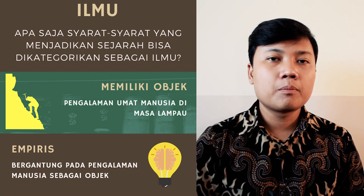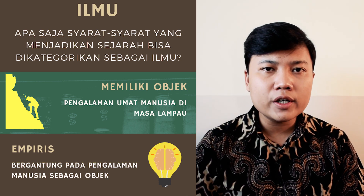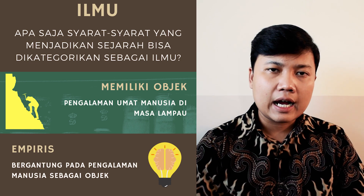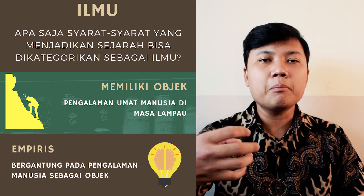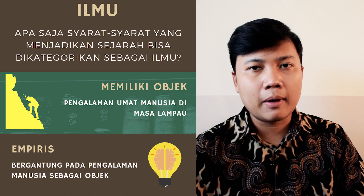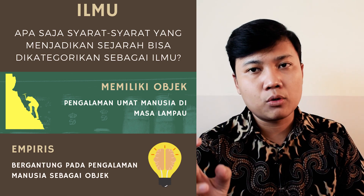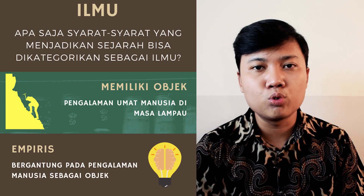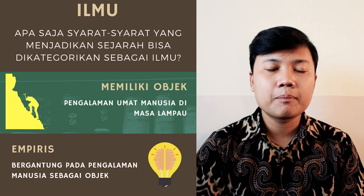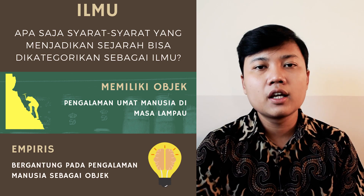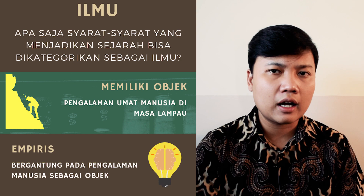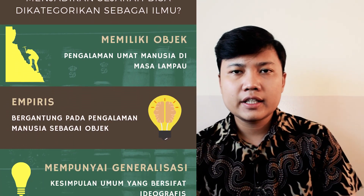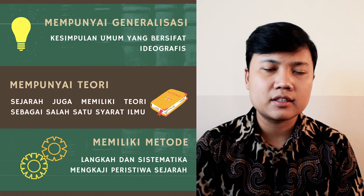Objek ilmu sejarah adalah perbuatan manusia di masa lampau. Kemudian yang kedua, ilmu itu harus memiliki sisi empiris. Kalau di sejarah, tentu sangat bergantung pada pengalaman-pengalaman yang bisa diamati dari jejak-jejak masa lalu, yang menggambarkan perbuatan manusia sebagai objek studi ilmu sejarah. Jadi empirisme dalam sejarah adalah pengalaman umat manusia di masa lalu yang bisa diuji melalui bukti-bukti jejaknya, misalkan surat kabar, klip video dokumenter, foto, prasasti, dan sebagainya.